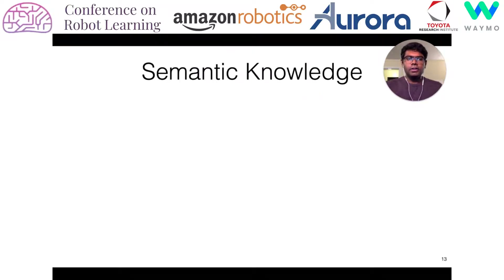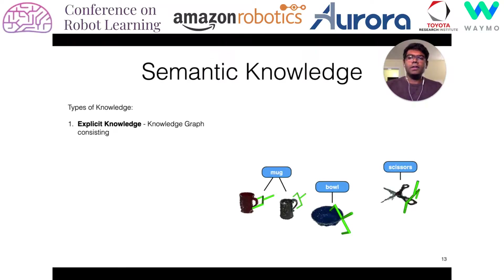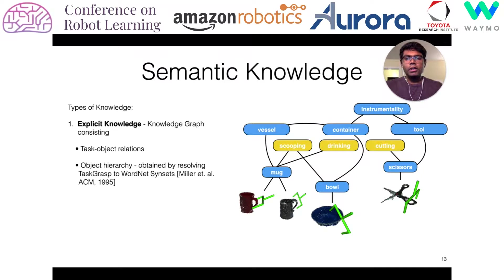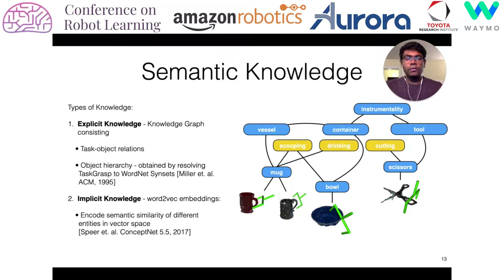I mentioned semantic knowledge, and there are two main types. First is explicit knowledge in the form of a knowledge graph — at the leaf nodes you have the grasps themselves, attached to class nodes, with task-object relationships like mug for scooping, scissors for cutting, and an object hierarchy obtained by resolving task-grasp concepts to WordNet. We also have implicit knowledge in the form of word2vec embeddings, which encode semantic similarity of different entities or graph nodes in vector space.